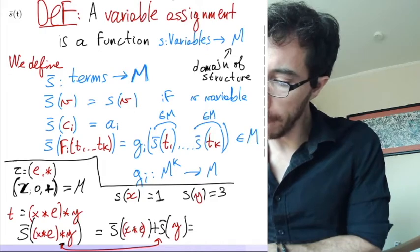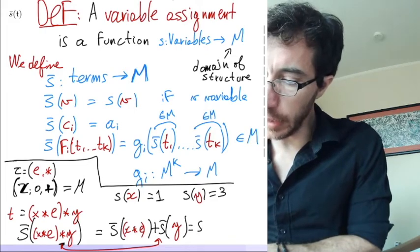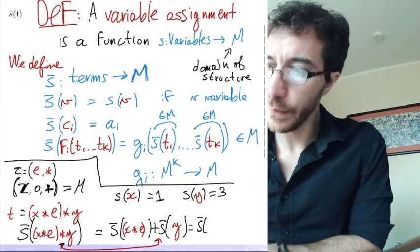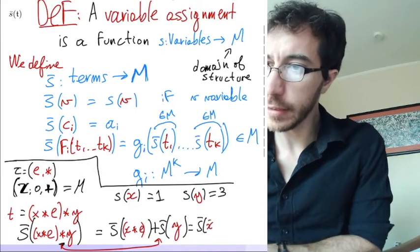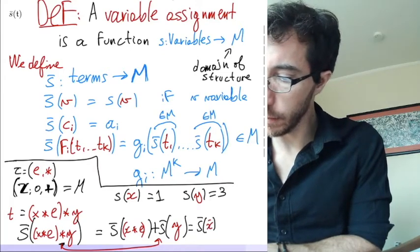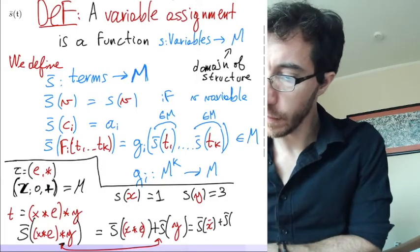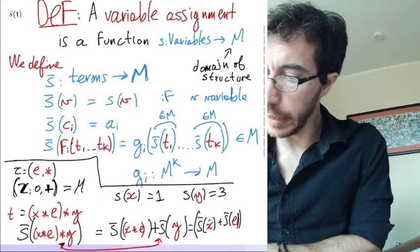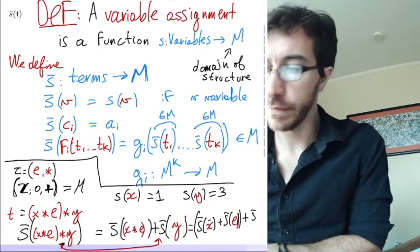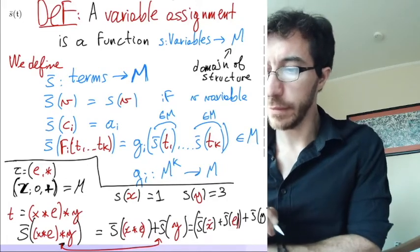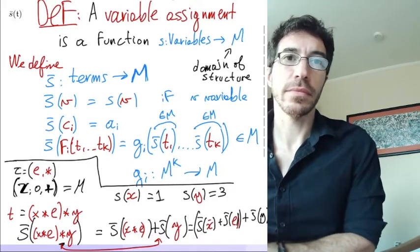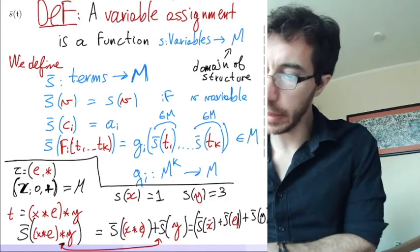Okay, so good. And that is equal to s bar of x plus s bar of e plus s bar of y. Right, let me bring this up a notch. I just developed the x star e.